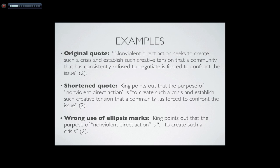Here you have the original quote, it's from King: "Non-violent direct action seeks to create such a crisis and establish such creative tension that a community that has consistently refused to negotiate is forced to confront the issue." Here's an example of how you can shorten the quote using ellipsis marks. King points out that the purpose of non-violent direct action is to create such a crisis and establish such creative tension that a community ... is forced to confront the issue.